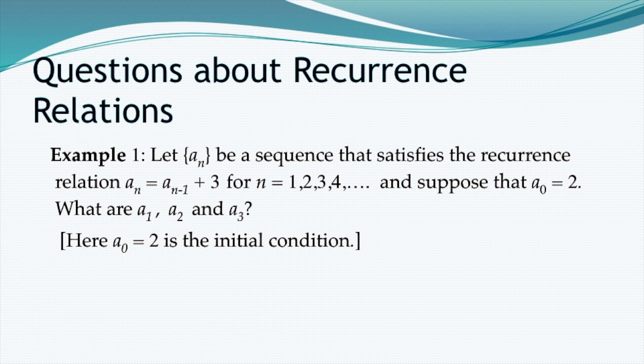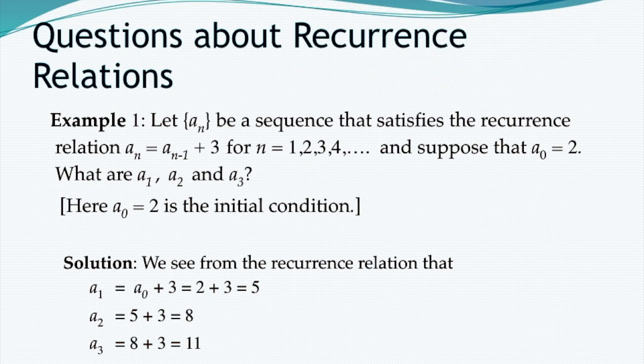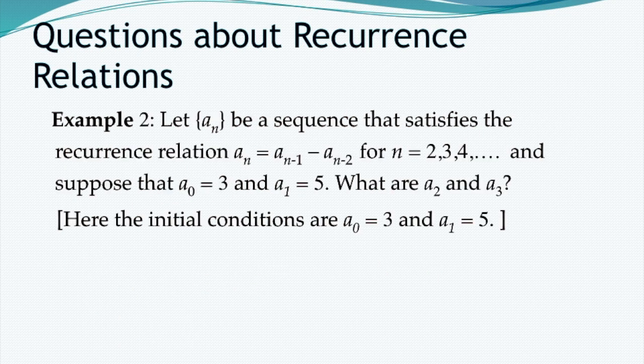Consider a sequence satisfying the recursion relation a(n) = a(n-1) + 3, for n = 1, 2, 3, ... with initial condition a0 = 2. Then a1 = a0 + 3 = 2 + 3 = 5, and a2 = a1 + 3 = 5 + 3 = 8, and so on.